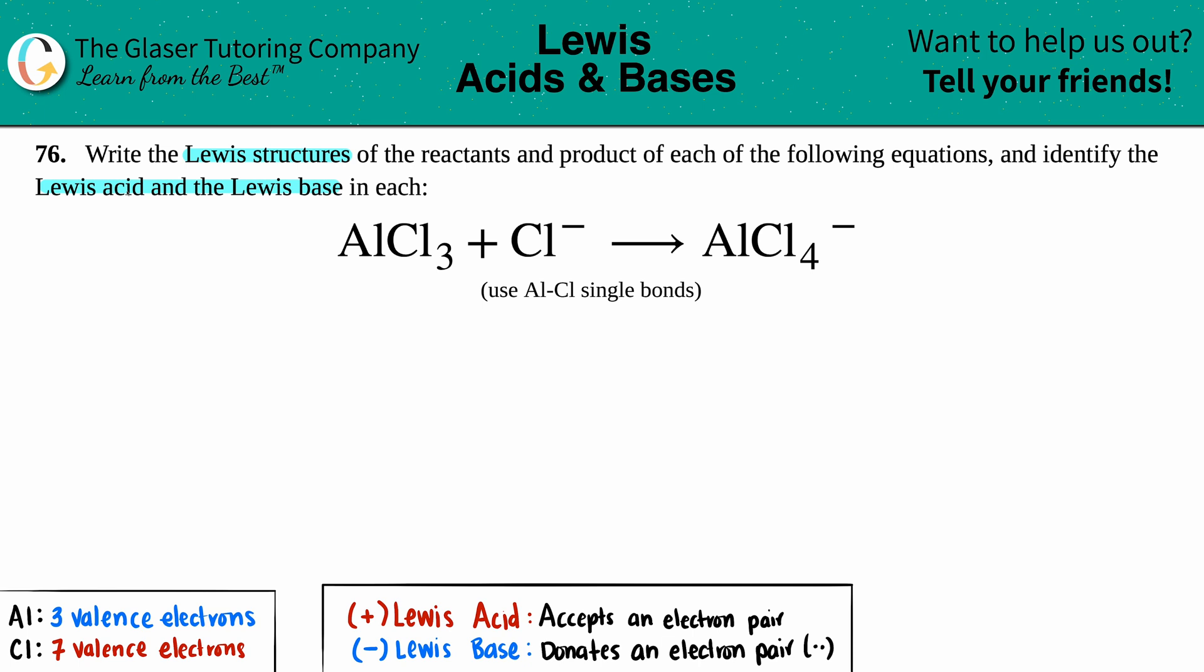Let's just draw out those Lewis structures first. So we have AlCl3. I wrote down just on the bottom here as a refresher how many valence electrons each element has because we need that. So it seems like here I have aluminum that's in the middle surrounded by the three chlorines, so one, two, and three.